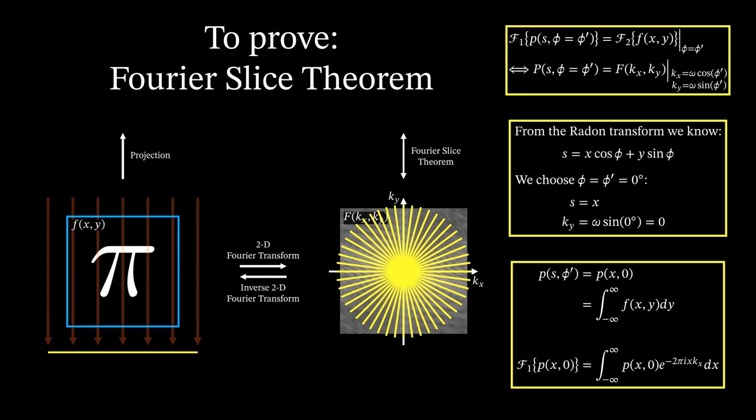Finally, we come to the proof. Starting with the 2D Fourier transform of the object function at phi equal to zero degrees, we plug in the 2D Fourier transform and can discard the ky term as it is zero. Next, we rewrite the integral. Here, we can plug in the expression of the detector function. Finally, we rewrite this as the Fourier transform and we are done proving the Fourier slice theorem for the special case of phi equals zero degrees.